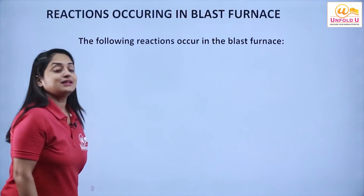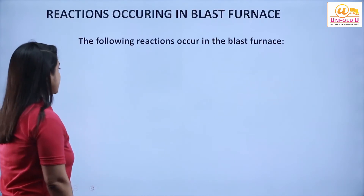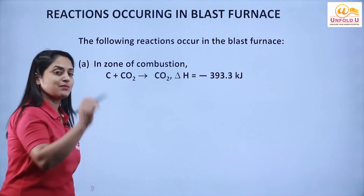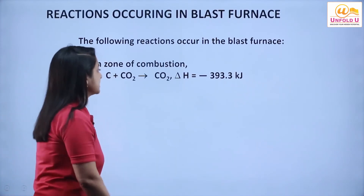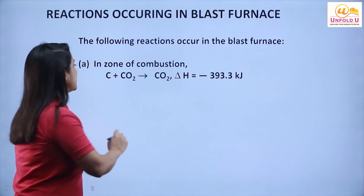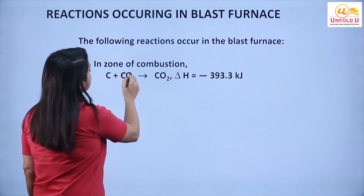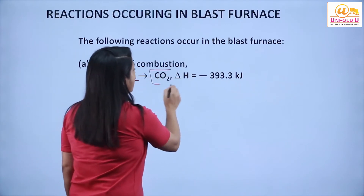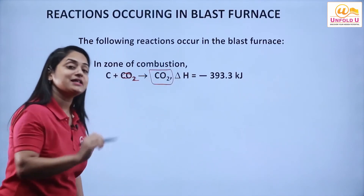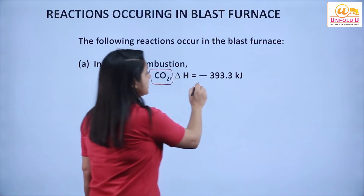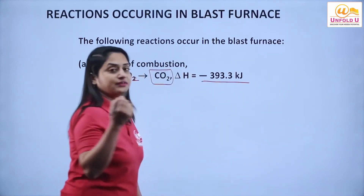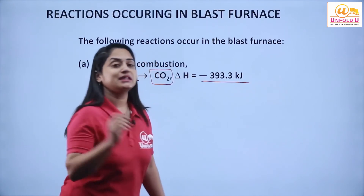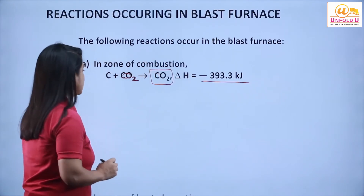The following reactions occur in the blast furnace. First is the zone of combustion — combustion means heating in the presence of oxygen. When you heat carbon in the presence of oxygen, you get carbon dioxide. This is an exothermic reaction which releases a large amount of enthalpy: ΔH = −393.3 kJ.